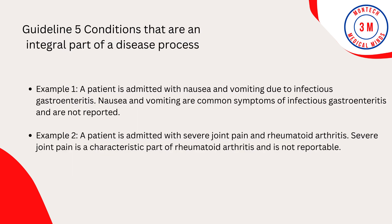Guideline 5: Conditions that are an integral part of a disease process. Signs and symptoms that are associated routinely with a disease process should not be assigned as additional codes, unless otherwise instructed by the classification. Example 1: A patient admitted with nausea and vomiting due to infectious gastroenteritis — nausea and vomiting are common symptoms and are not reported. Example 2: A patient admitted with severe joint pain and rheumatoid arthritis — severe joint pain is a characteristic part of rheumatoid arthritis and is not reportable.